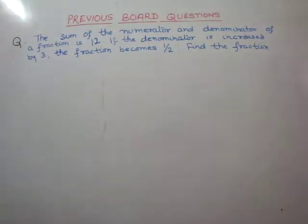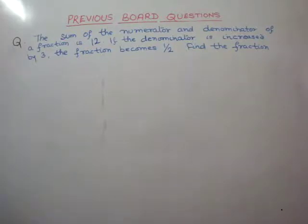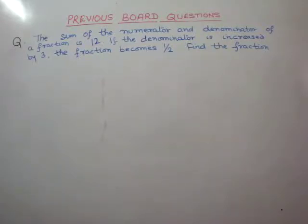Aap question hai: the sum of the numerator and denominator of a fraction is 12. If the denominator is increased by 3, the fraction becomes half. Find the fraction.